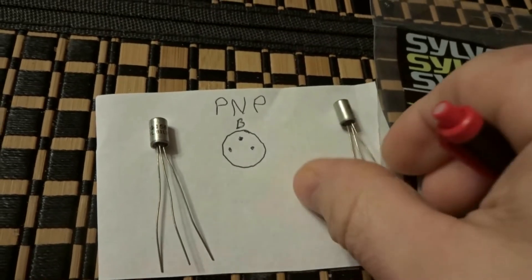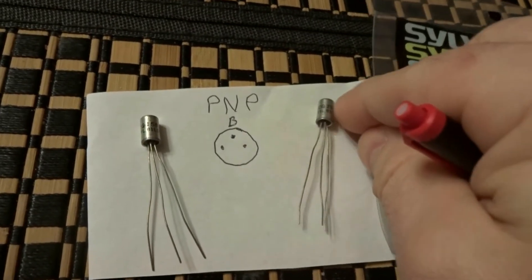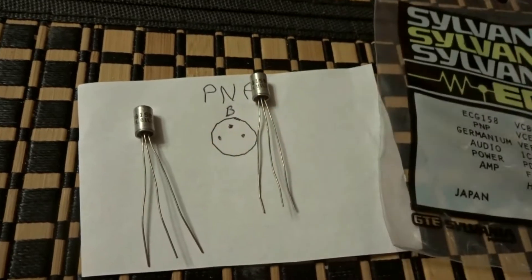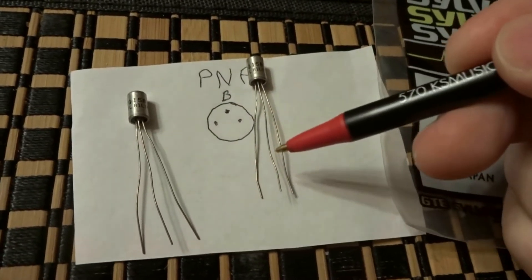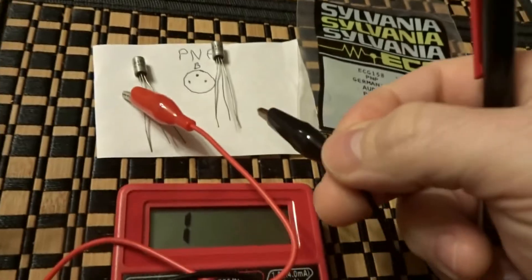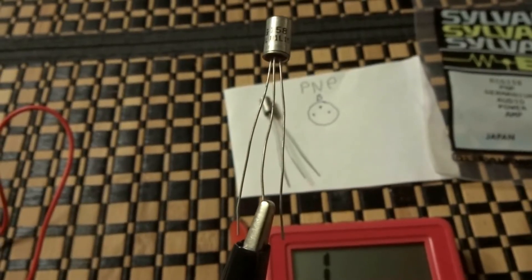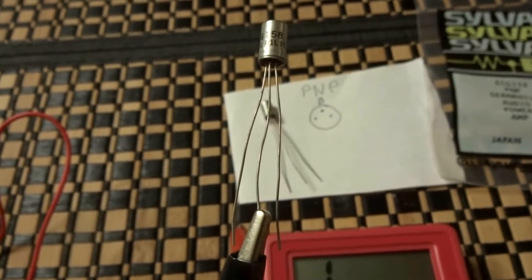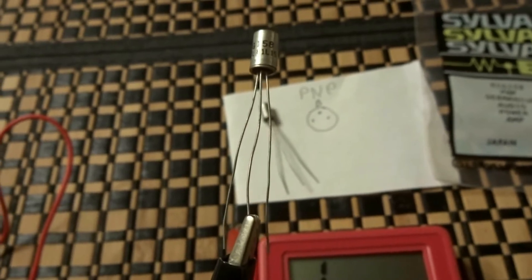We're gonna set it to the diode, and then we're gonna take our black lead and connect it to that middle leg. Now we're gonna take our red lead from the multimeter and connect it to each leg.